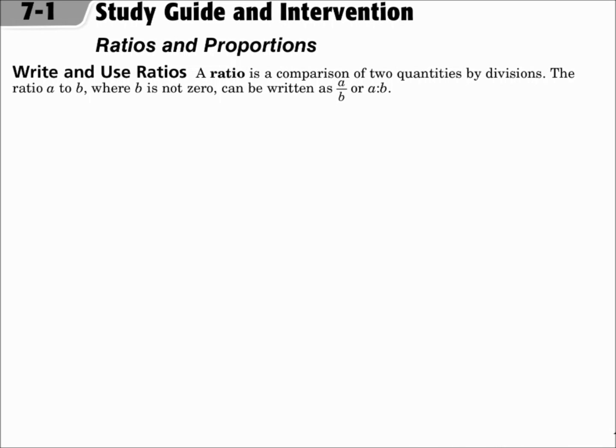This is lesson 7.1, Ratios and Proportions. Your objectives are to write ratios and to write and solve proportions.